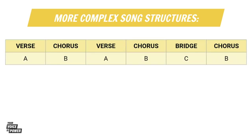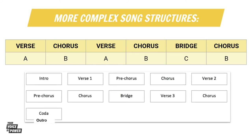Entrepreneur and many other songs are often more complex than just two different repeating sections. Songs can also have more complex structures. A song could have a bridge added toward the end to build up to the final chorus, or it could have an intro and outro section. Here's an example of a more complex song structure, something more like the Entrepreneur song.